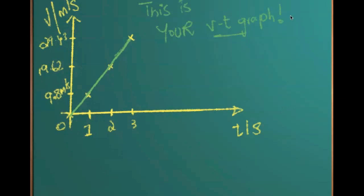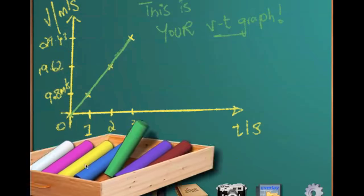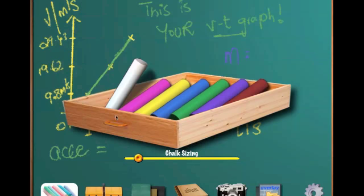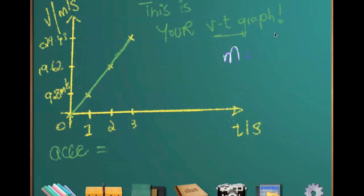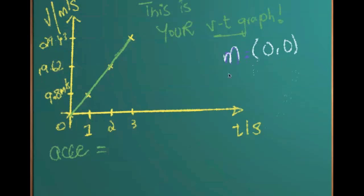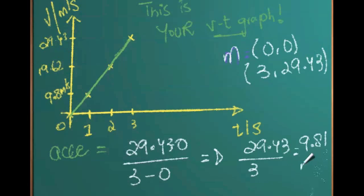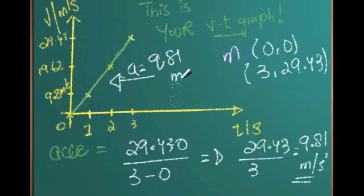So this is what happens to you. Now if I want to find the acceleration from this velocity-time graph, you can simply find it using the gradient. Taking the first point (0, 0) and the last point (3, 29.43), the gradient M = (29.43 − 0) / (3 − 0) = 29.43 / 3 = 9.81 meters per second squared. This confirms that your acceleration is 9.81 m/s², exactly as we expected.